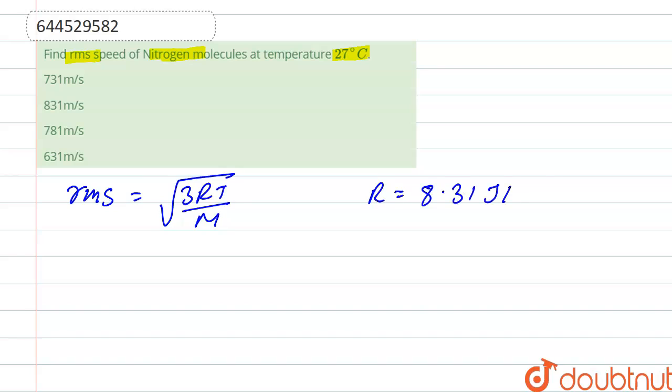.31 joule per kelvin per mole. The temperature is 27 degrees Celsius plus 273, which becomes 300 Kelvin. Nitrogen has atomic weight which can be represented by M, where M is the molecular mass